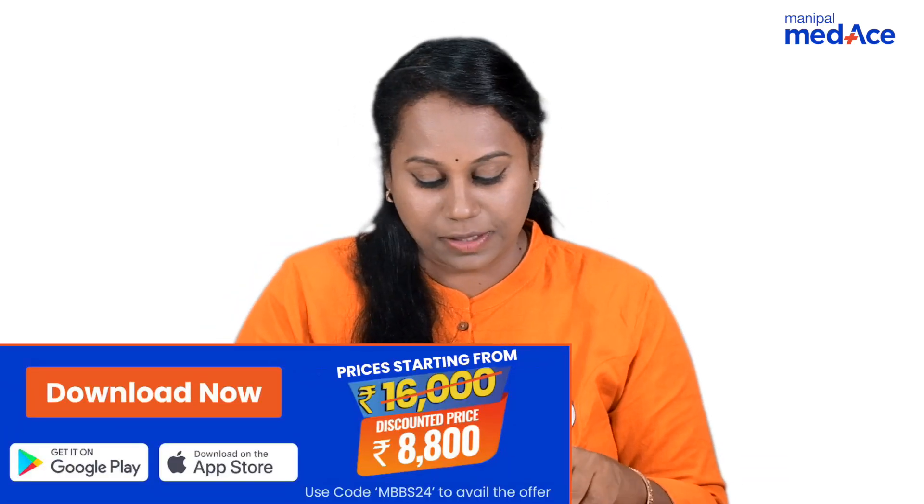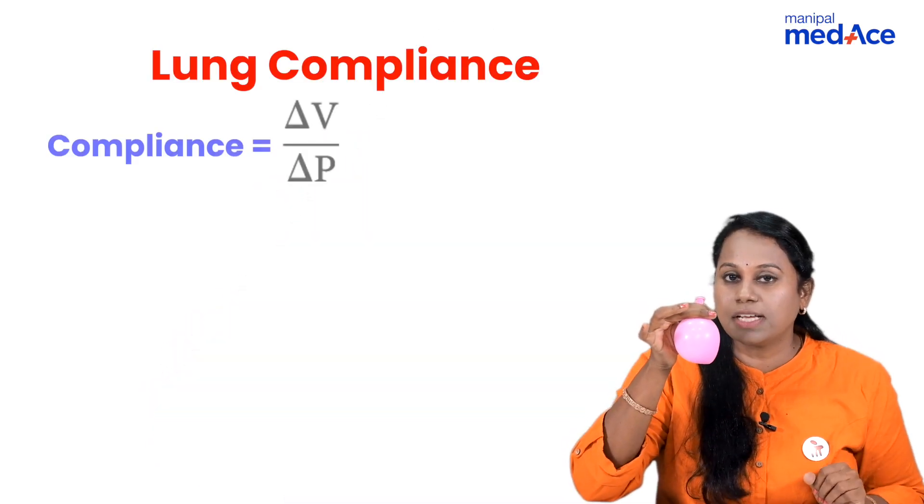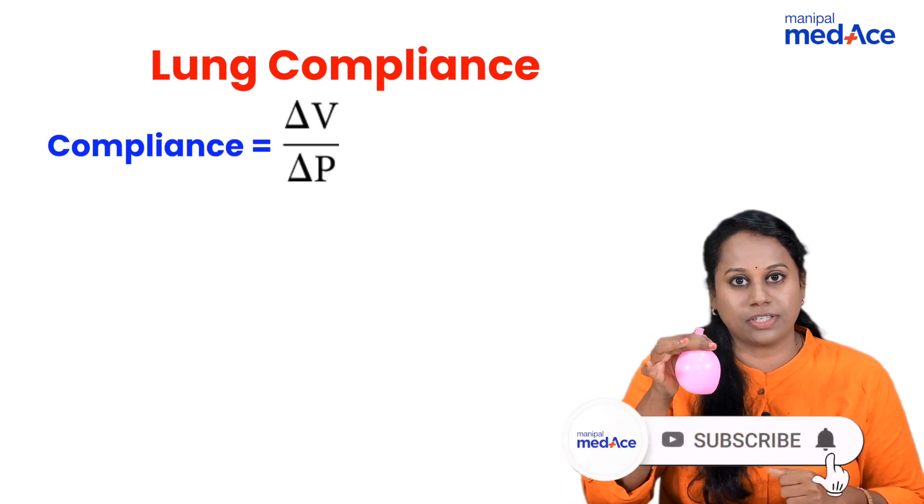What is compliance? If this is a normal lung, for the change in pressure that I apply, look at the change in volume that is happening. This is a normal lung — for the change in pressure that I applied, this much is the volume change. So, the formula for compliance is change in volume divided by change in pressure.